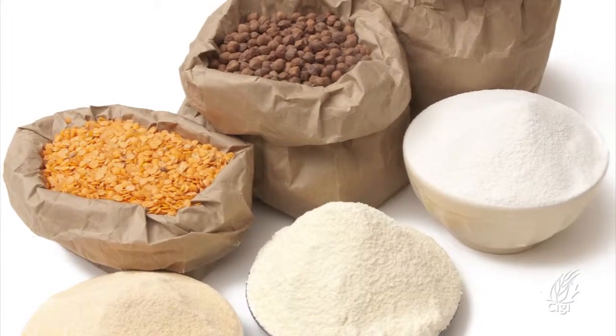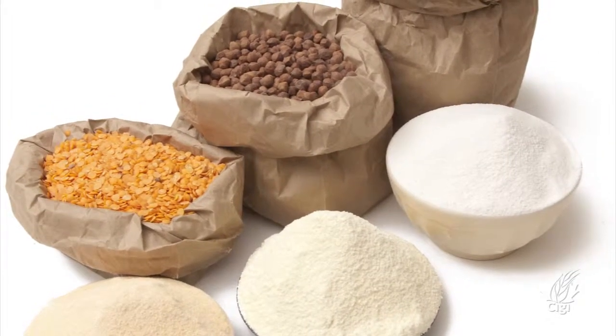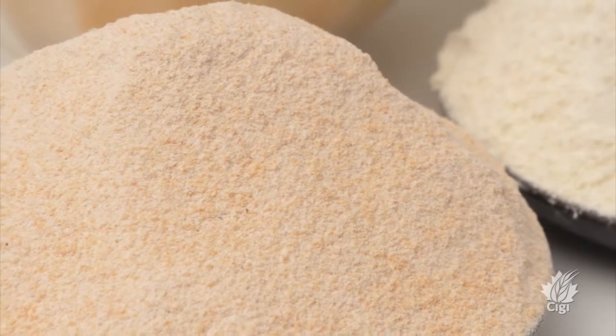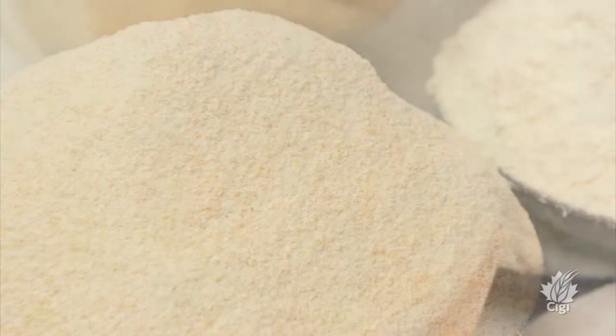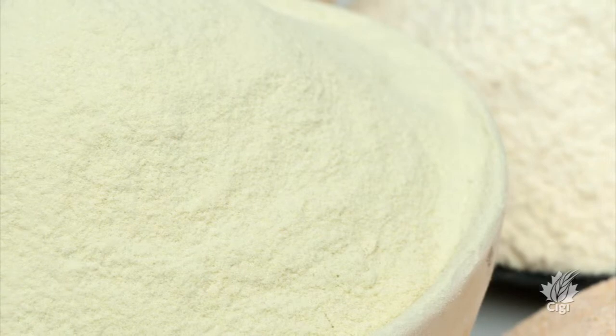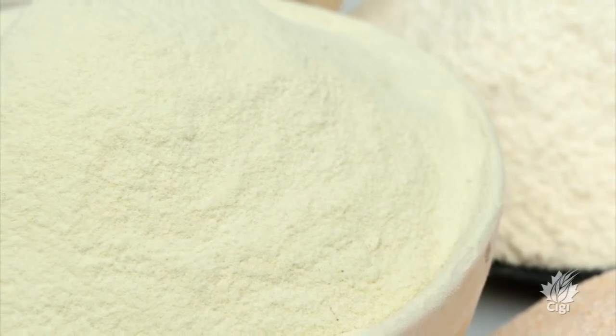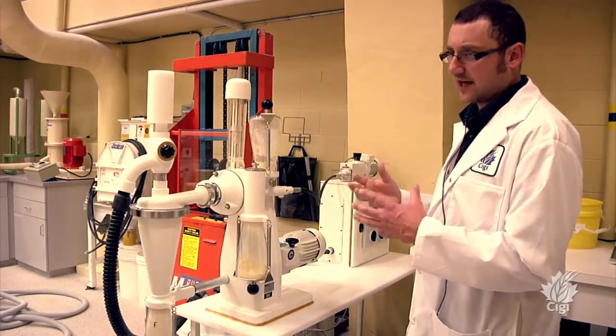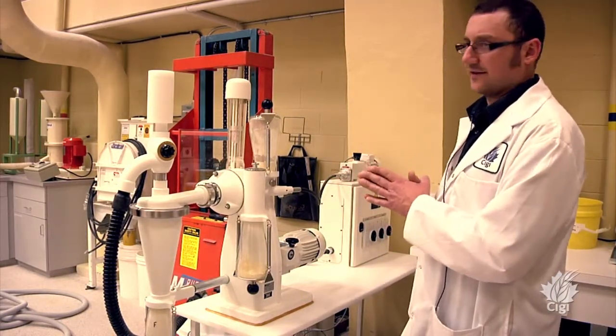Each pulse flour is different. You can have chickpea flour or lentil flour or bean flour, and the parameters have to be set differently. We may have to set the air flow differently or the speed of the wheel differently to get the desired particle size cut point that we wanted.